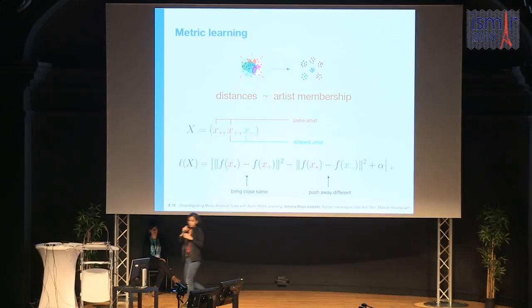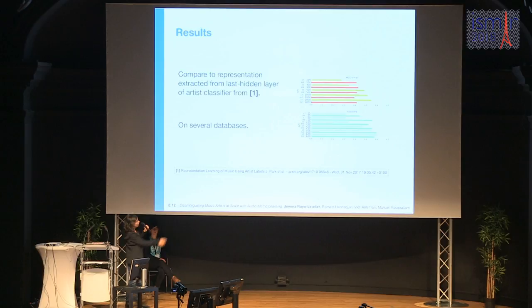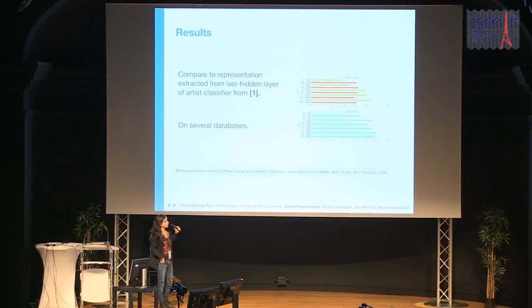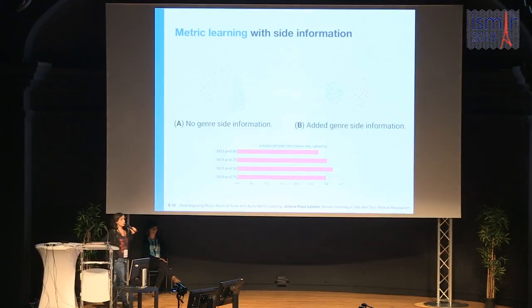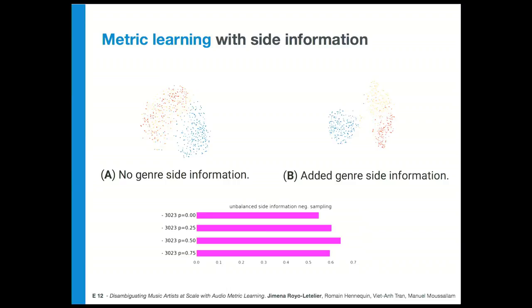We compared our system with another representation extraction system and ran experiments on different databases. The overall result is that the system is able to distinguish between artists sharing the same name. We also add genre information — training the system so that artists sharing the same genre are separated, since this is the hardest case. Results show this information helps in the learning process. Come to the poster for more.